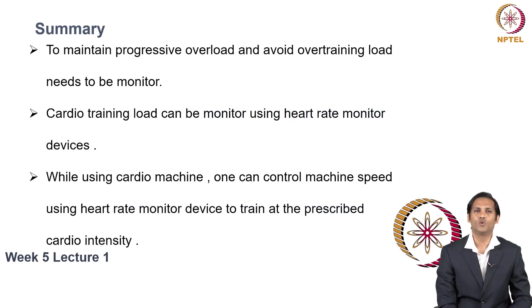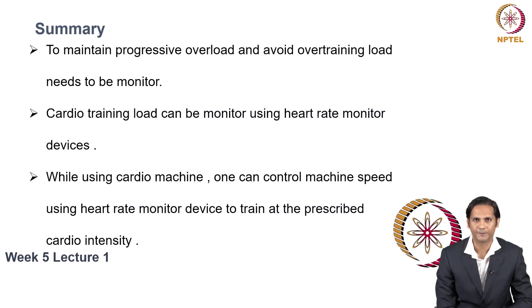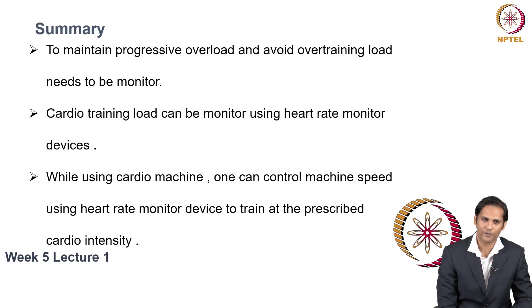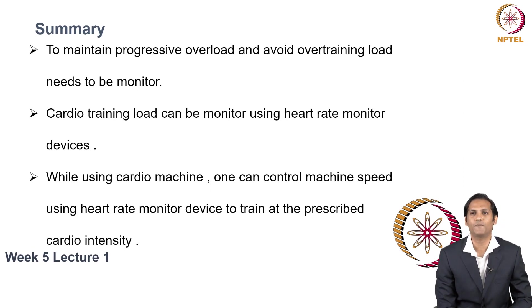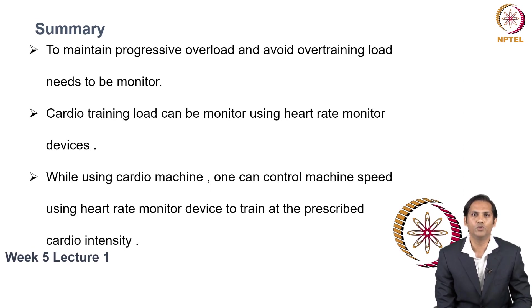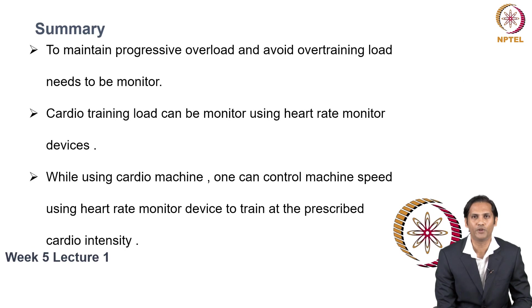In summary, to maintain progressive overload and avoid overtraining, load needs to be monitored. Cardio training load can be monitored using a heart rate monitor device. While using a cardio machine, one can control the machine speed using the heart rate monitor to train at a prescribed cardio intensity, rather than choosing a random speed based on your own perception of exertion. This provides a very objective load for a given workout routine.